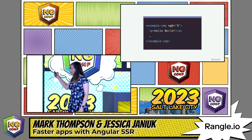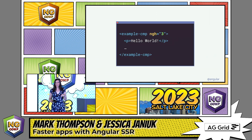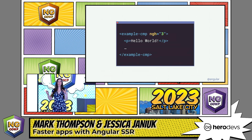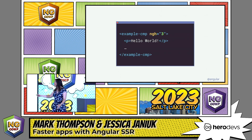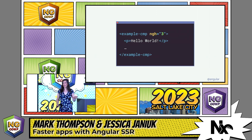You'll also see this additional ngH attribute with a number attached to your components. This is actually an index that references the data in the transfer state. We do this magic deduplication — so if you're doing something like an ngFor, we don't serialize the same data over and over again. There's only one annotation for that, so we're very careful about how much annotation data we're sending to the client. You don't really need to know that this attribute is there — it's been there doing the hydration magic for you all along. Well, actually, it's there now doing that hydration magic for you.